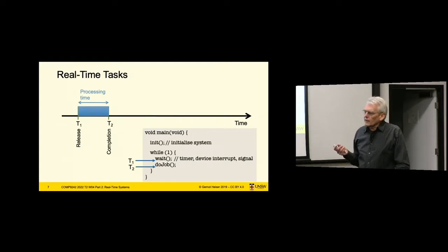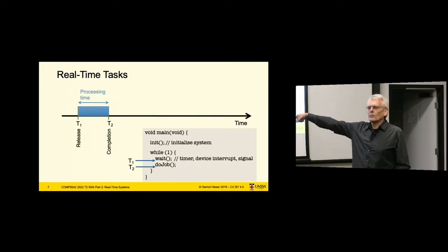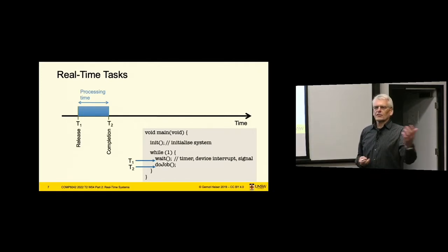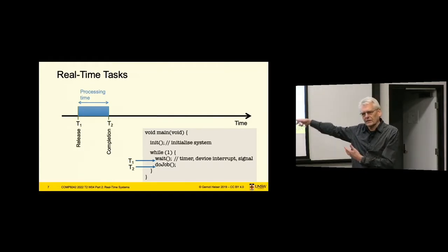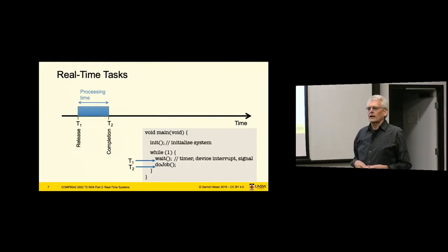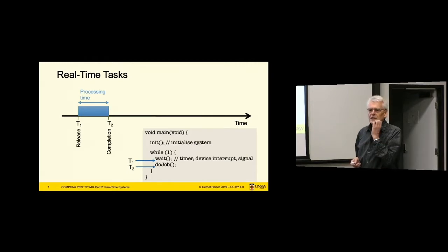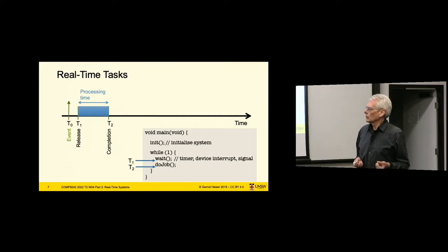There's a bit more to it, because just because the program starts executing in response to the interrupt doesn't mean that's when the interrupt happened. There's some processing before that — the interrupt generally gets caught by the operating system and then handed to user level. Depending on what else is going on in the system, the period from when the interrupt is raised until the handler actually starts executing may fluctuate. That's called the release jitter.